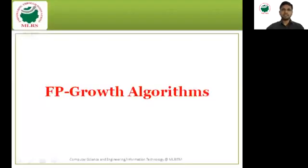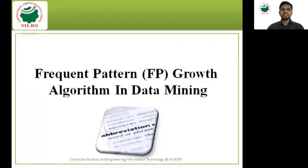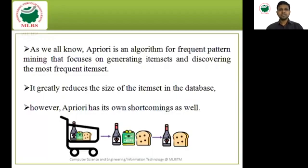FP Growth algorithm — the abbreviation stands for Frequent Pattern Growth algorithm in data mining. As we know, Apriori is an algorithm for frequent pattern mining that focuses on generating itemsets and discovering the most frequent itemset.